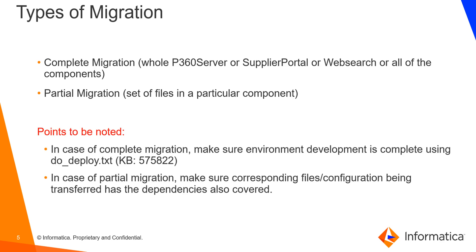Points to be noted: in case of complete migration, make sure the environment is already fully developed. If there are bits and pieces not configured in the lower environment and there is a request for dev to QA migration, then QA will be in the same incomplete state. In case of partial migration, as only a set of files will be migrated, make sure the dependencies are also covered. For example, if there is a change in the plugin INI file related to a custom property, make sure the custom plugin is already part of the migration or already present on the higher environment — else there will be an issue for server behavior.